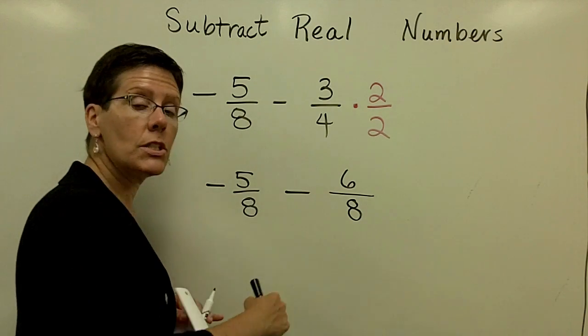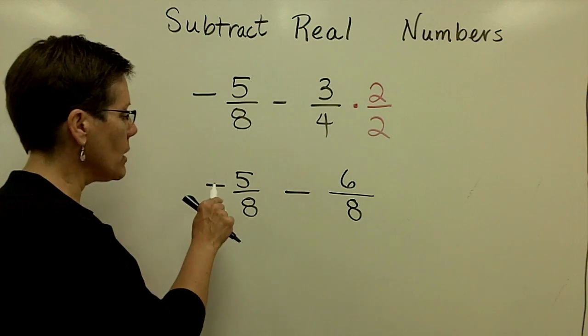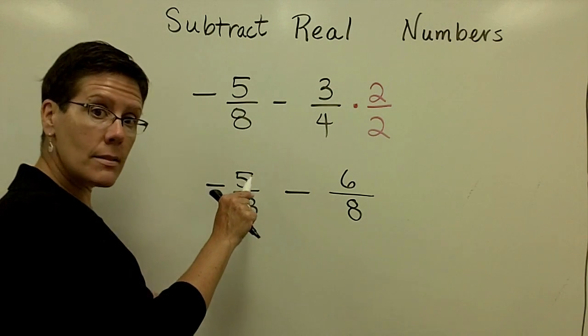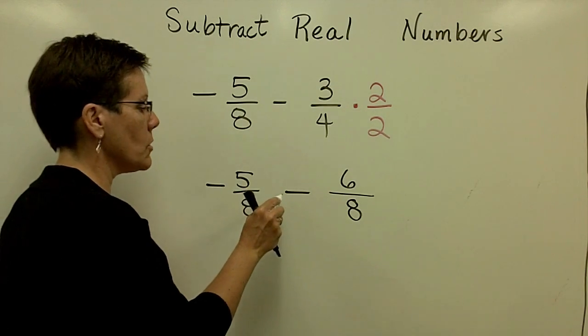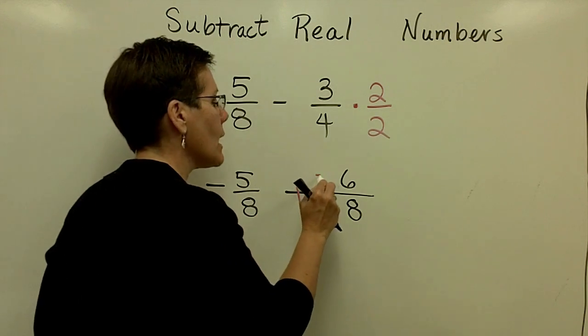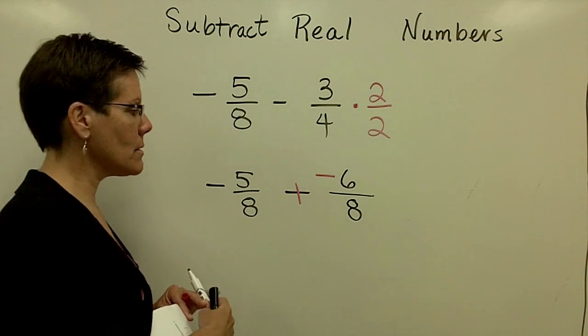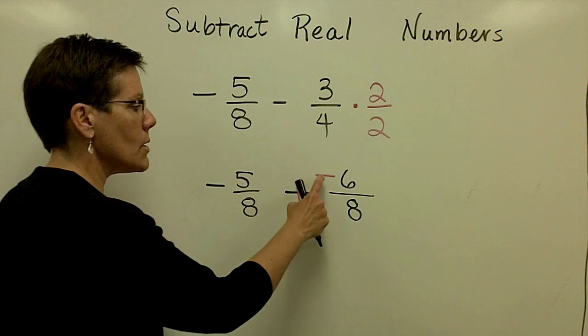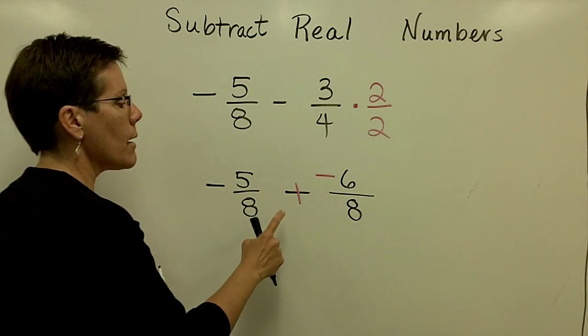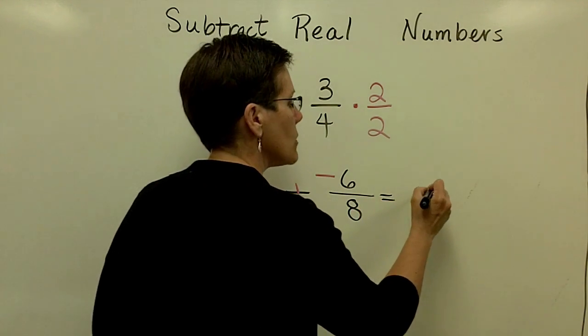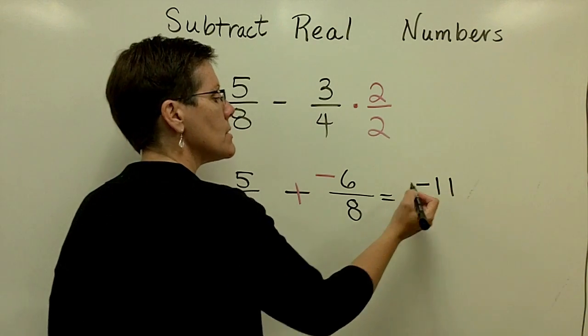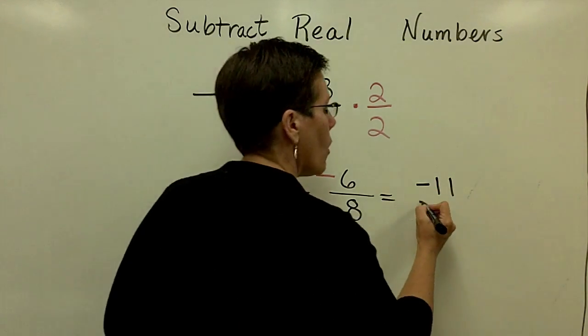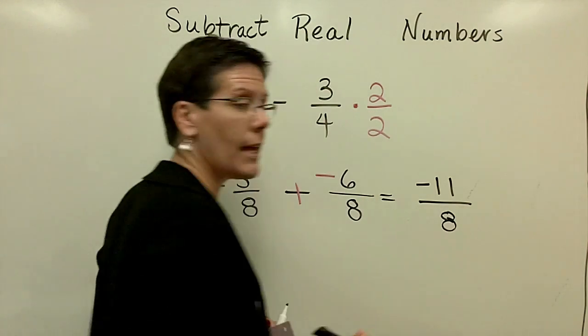Now you just want to take this first fraction, which has a negative 5 in the numerator. The sign is best thought of with the numerator because I have to subtract these two or add the opposite because it's a subtraction problem. Because their signs are alike, I'm going to add their absolute values. 6 and 5 add to be 11. They share a common sign that is negative over the common denominator of 8.